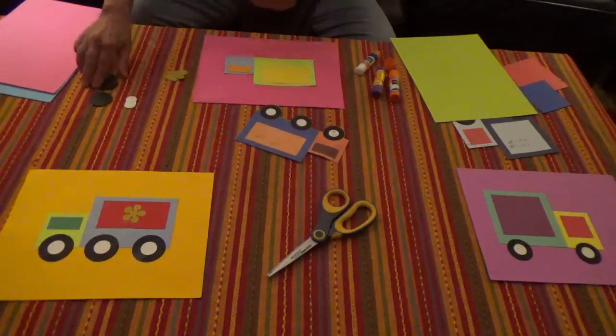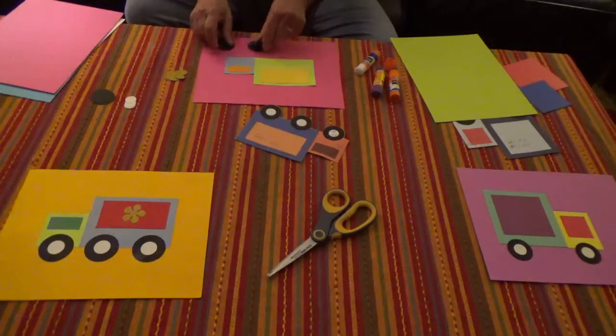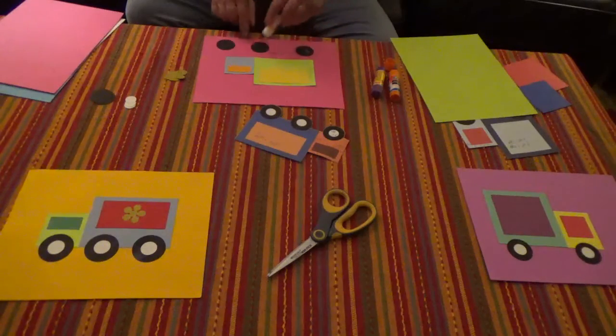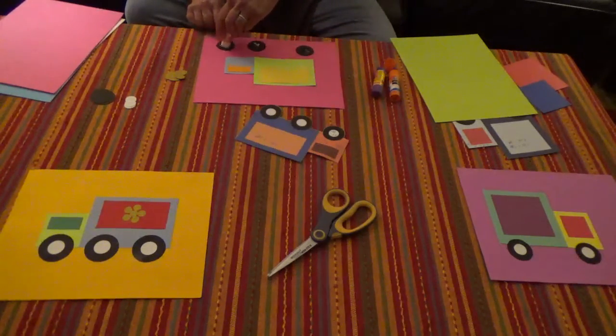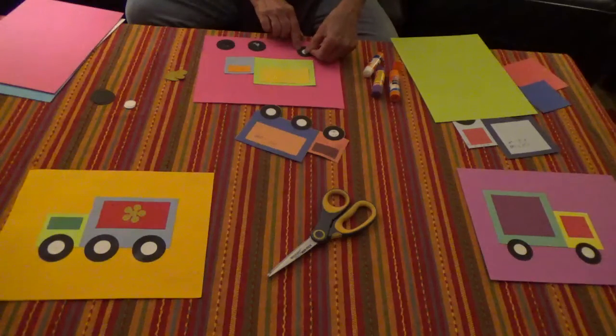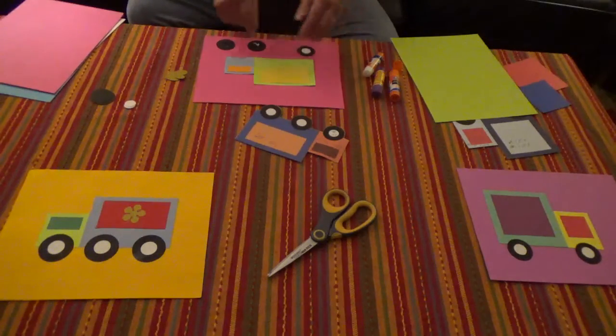Then we are going to take our tires. This is a bigger truck, so we are going to use three tires. And we are going to put the little hubcaps on. And again, you can make them whatever color you want. You can decorate them. You can really have fun.